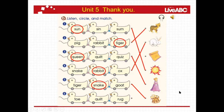Number six: rock. Rock. What is the meaning of rock? Alfombra. Okay. Repeat: sun, sun. Tiger, tiger. Queen, queen. Rabbit, rabbit. Snake, snake. Rock, rock. Okay.